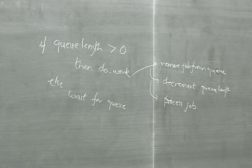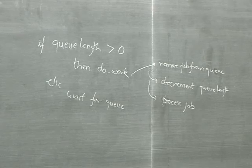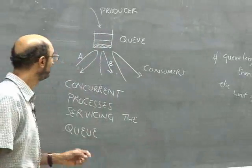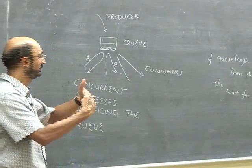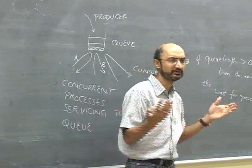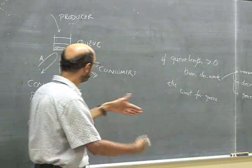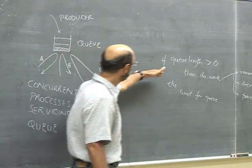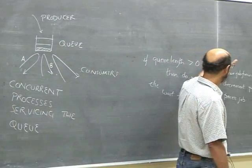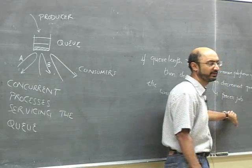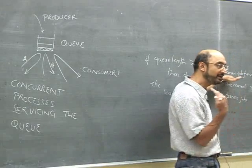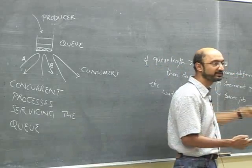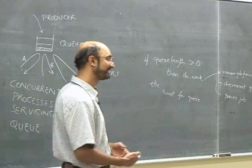The answer is it could go wrong. Let's say there's exactly one job in the queue. Call the two threads A and B. It could be the case that both A and B execute the check statement at the same time — because we said this is concurrent, there's no ordering. They both evaluate the queue length and both say queue_length is greater than zero. Then A removes the job, decrements the queue length to zero, and processes the job. While A is doing this, B gets in, says remove the job from the queue — but there's no job. So you get a segmentation fault and the whole thing dies.